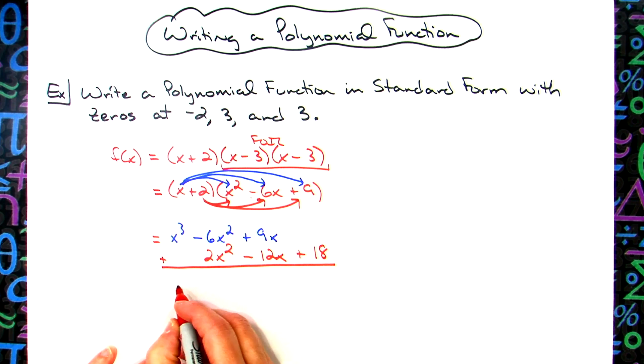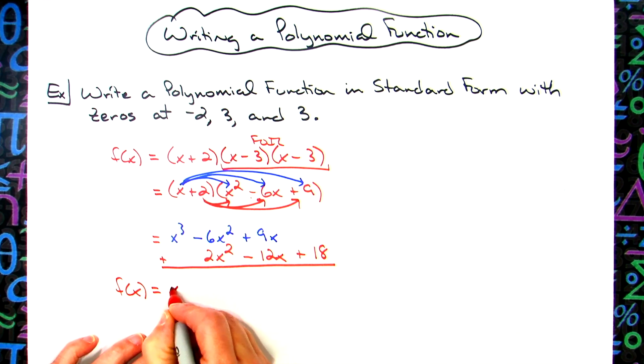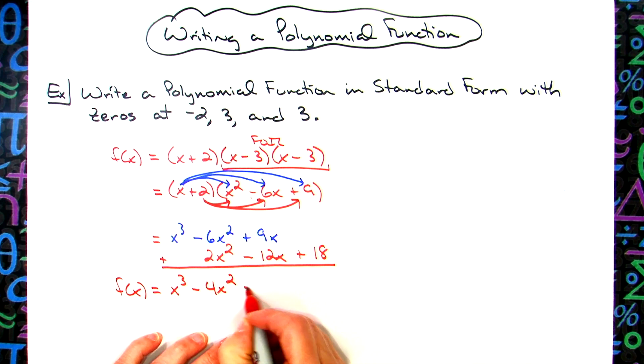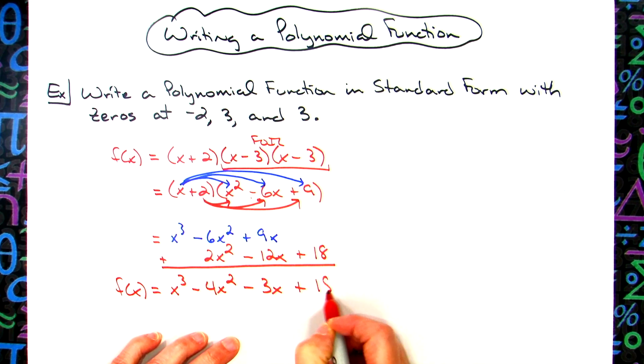Now I'm just going to go down, adding going down here. I'm going to go ahead and put my f of x out here, so it's a polynomial function called f. Adding here, I'll have an x to the third. Then here, I'll have a minus four x squared. Here, we'll have a minus three x and then a plus 18.